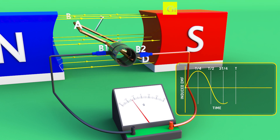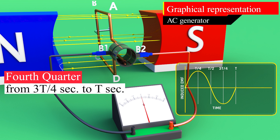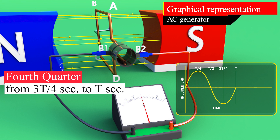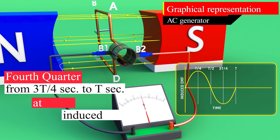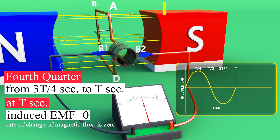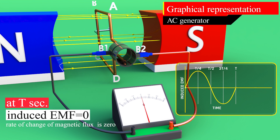Finally, during the last quarter of rotation from 3T/4 to T seconds, part AB goes up and part CD moves down. In this period, the induced EMF decreases from its maximum negative value to zero. At time T seconds, the armature is again in a vertical position and moving parallel with the magnetic field. The rate of change of magnetic flux is zero, and therefore the induced EMF is zero.